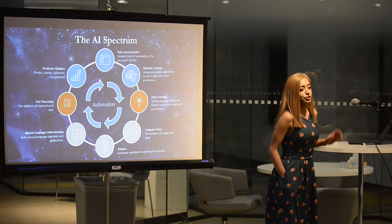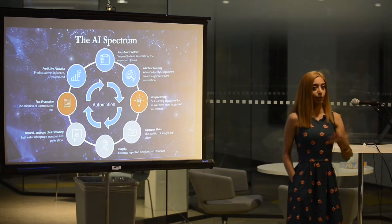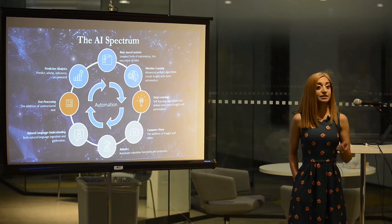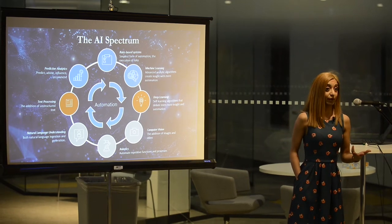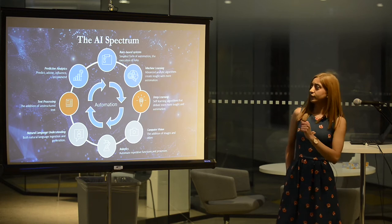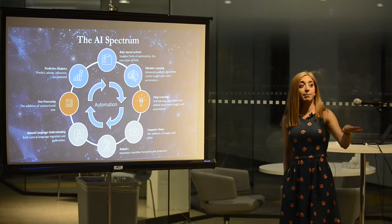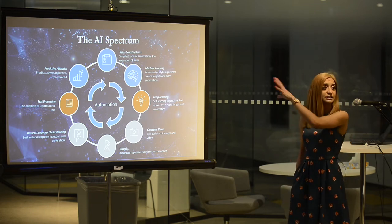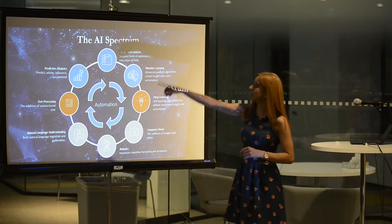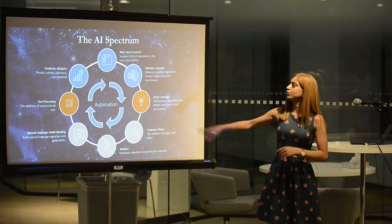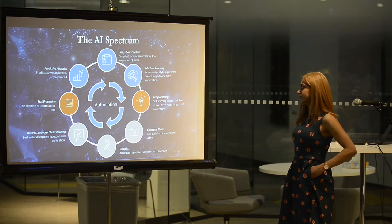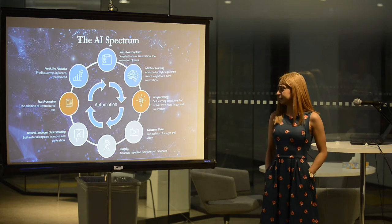Let's go into something more in our realm. What are some of these models or processes that run in the background? What are the building blocks of AI? This is what I call the AI spectrum. We have bubbles on the outside — things like rule-based systems, predictive analytics, deep learning, machine learning, robotics, computer vision — and at the heart of it all is automation.